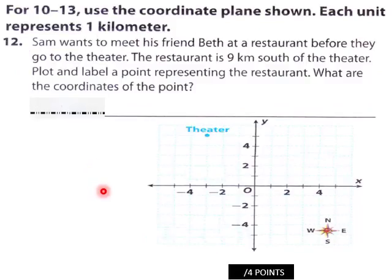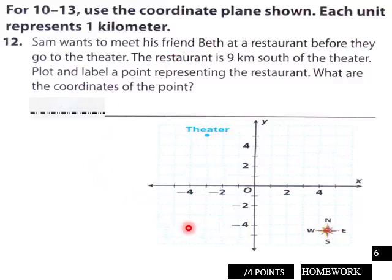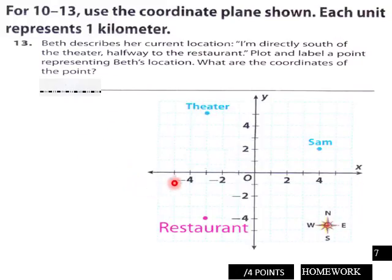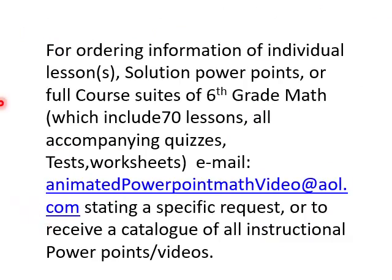Page five: describe Sam's location relative to the theater using a coordinate plane where each unit represents one kilometer. Page six: Sam wants to meet his friend Beth at a restaurant before they go to the theater — plot that. Page seven: still with the theater and restaurant scenario. This is 12.1 — email me with a specific request. Have a good day!